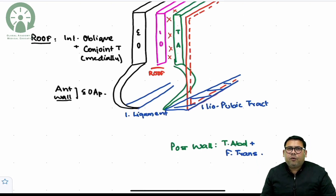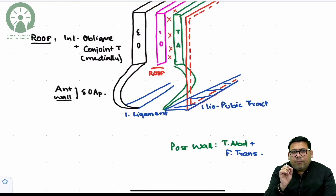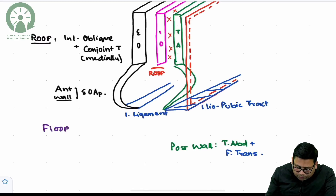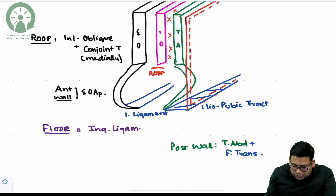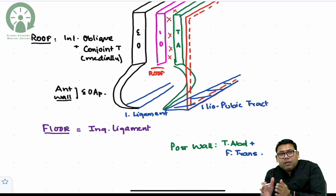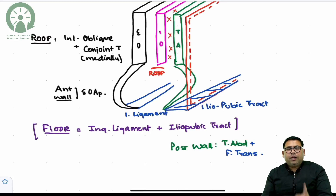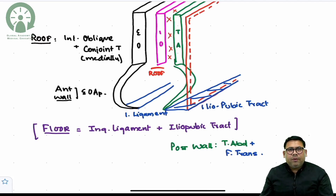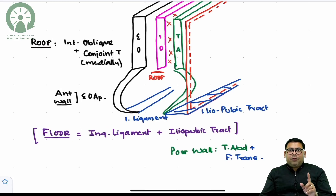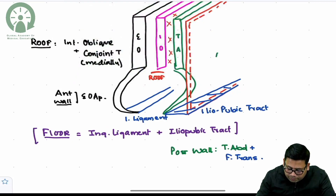Today's lecture is based on the concept of the iliopubic tract. If you don't understand the iliopubic tract, you don't understand anything about laparoscopic anatomy. The major component of the floor is formed by the inguinal ligament, but the posterior-most portion of the floor is also made by the iliopubic tract. If you don't understand this, you will always be confused with laparoscopic anatomy.